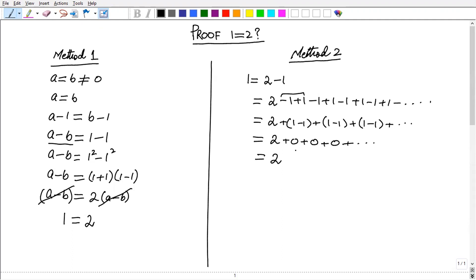So 2 plus 0 till infinity gives you 0 again. So again, 1 equals 2.